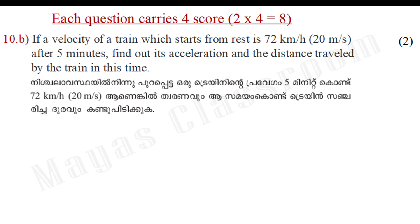If the velocity of a train which starts from rest is 72 km per hour or 20 m per second after 5 minutes, find out its acceleration and the distance travelled by the train in this time.